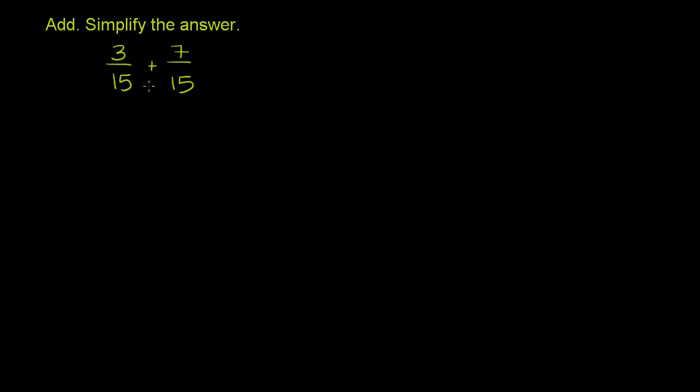We're asked to add 3/15 plus 7/15, and then simplify the answer. The process when you add fractions is, first of all, if they're not mixed numbers—and neither of these are—and if they have the same denominator, in this example the denominators are already the same, the denominator is 15.